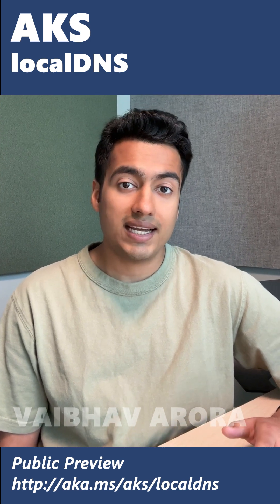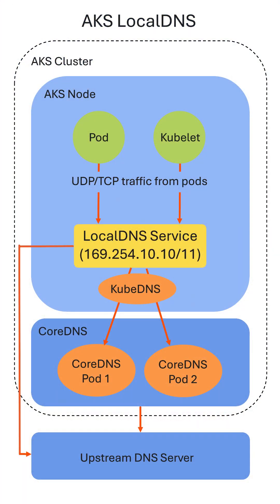With Local DNS, we deploy a systemd process which acts as a DNS proxy on each of your nodes, allowing you to resolve your queries locally. By doing so, this improves your latency because it prevents network hops between nodes, and with the added serve-stale feature, it also improves reliability because you can handle intermittent upstream DNS issues.